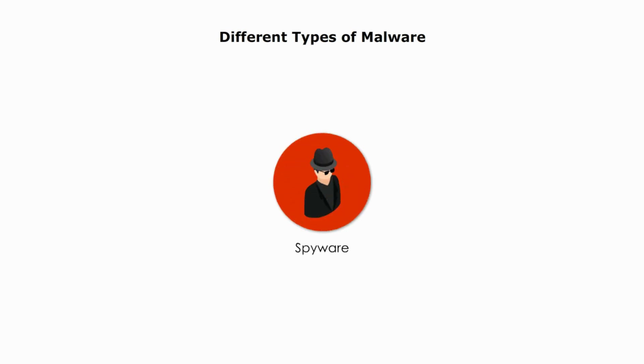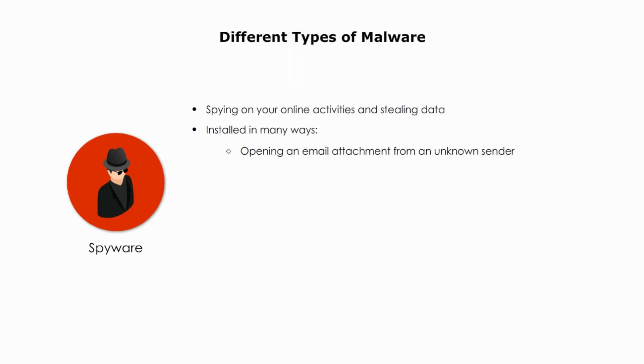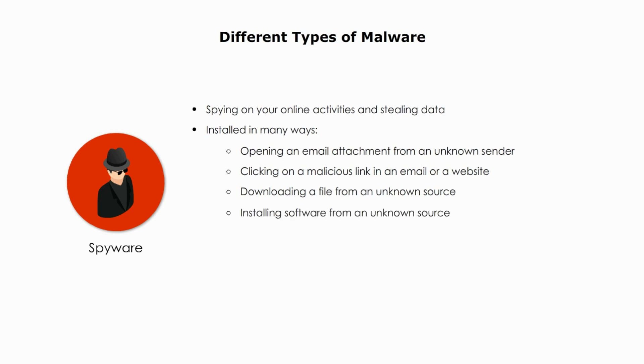Spyware is a type of malware that spies on your online activities or steals data on your computer. Spyware can be installed on your computer without your knowledge or consent in several ways, such as opening an email attachment from an unknown sender, clicking on a malicious link in an email or website, downloading a file from an unknown source, or installing software from an unknown source.